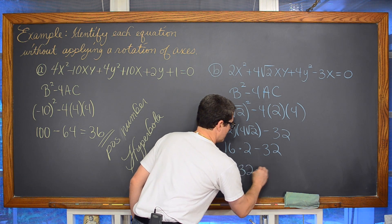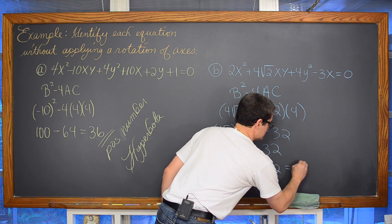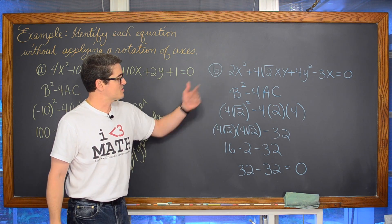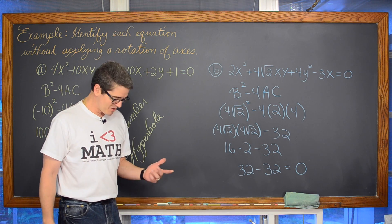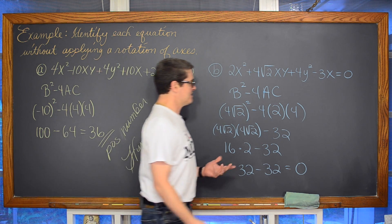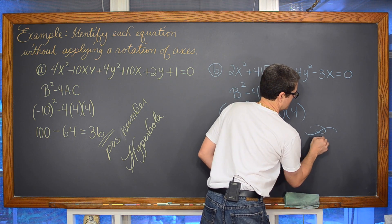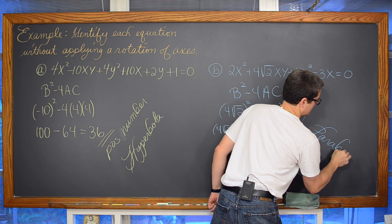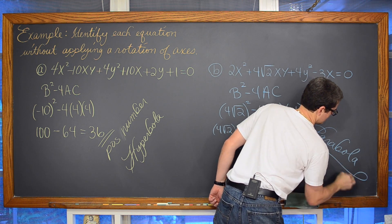We have 32 minus 32. Well now that is equal to 0. And just a second ago I said if b squared minus 4ac is equal to 0, then you are looking at a parabola.